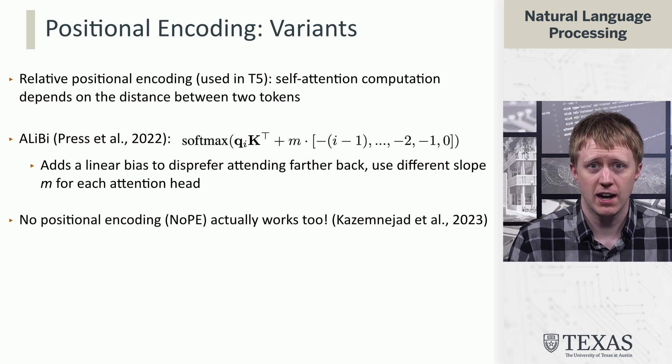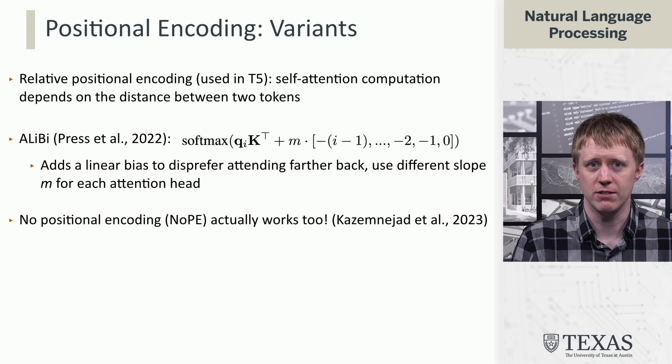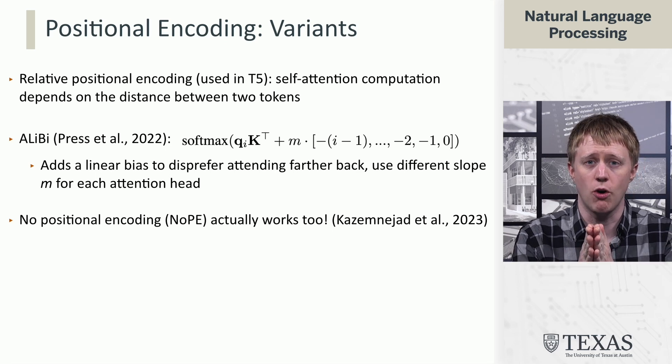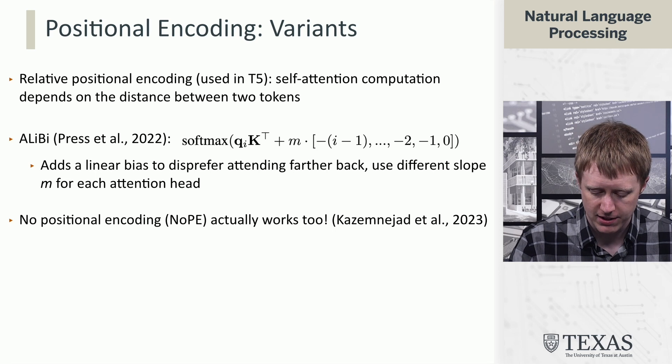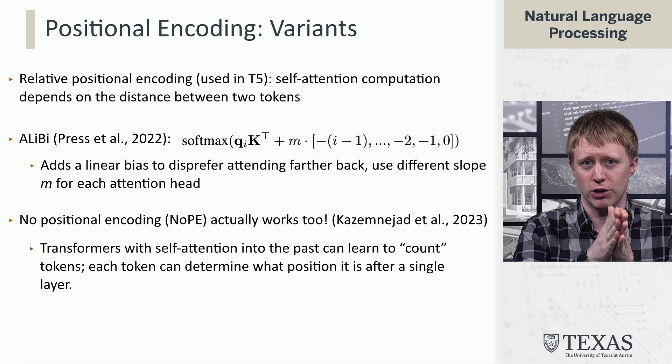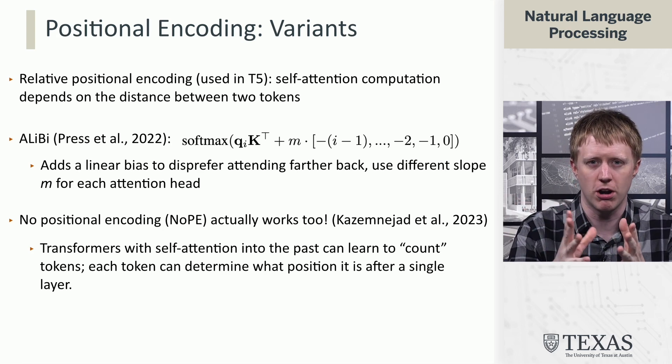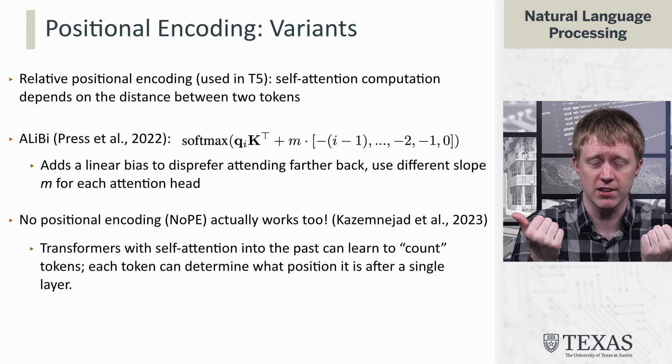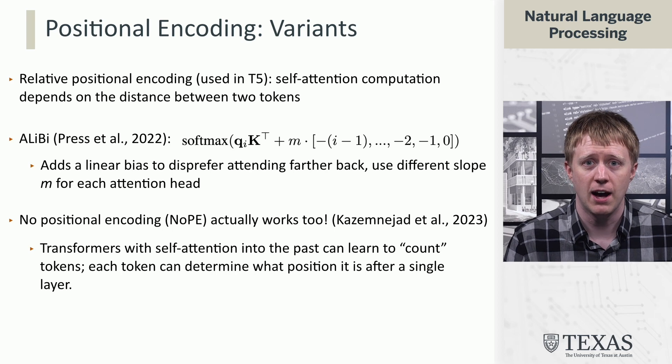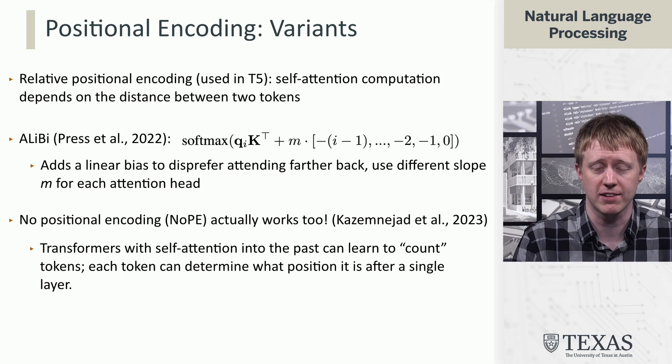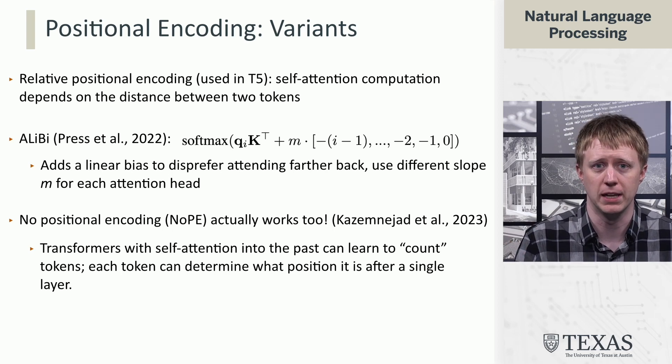And then finally, in 2023, there was a result looking at just not using positional encodings at all. Now, this is on a slightly modified version of the transformer from what we're seeing so far that only attends to things that are in the past. And this is really important because if you only look at the past, you can sort of learn to count up tokens and figure out where you are organically without having been told that information. If your self-attention mechanism lets you look in both directions, this is totally not going to work. But many of the modern models like ChatGPT do use this causal looking into the past self-attention variant, which we're going to come to a little bit later.